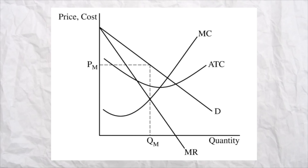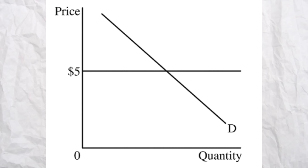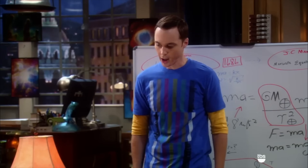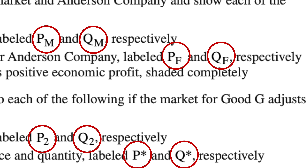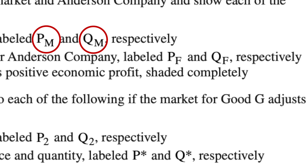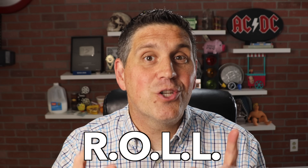The last L stands for label. There's a lot of graphing, so draw big graphs and make sure to label them correctly. The worst thing is to miss a point by not putting the letter S. A lot of the time, the College Board tells you what to label the graph, like PM or QM — use their labeling. The point is, if you want to do well on your free response, make sure to ROLL.